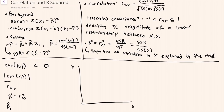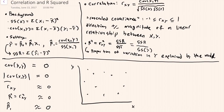Another setting is one in which there's essentially no discernible relationship between x and y. In this case, the covariance would be equal to zero, and the magnitude would also be equal to zero. The correlation would be approximately zero. The proportion of variation explained by a model would also be approximately zero, as well as the estimate of the slope parameter.